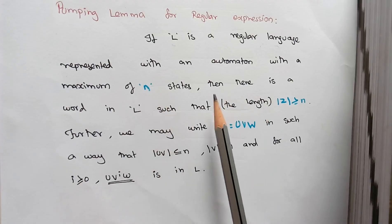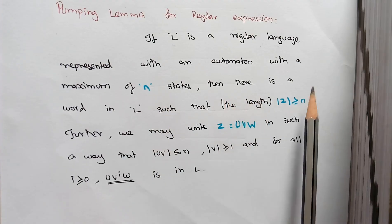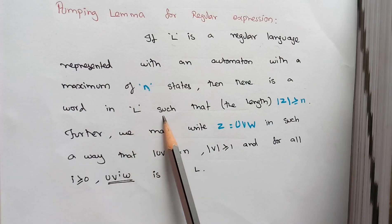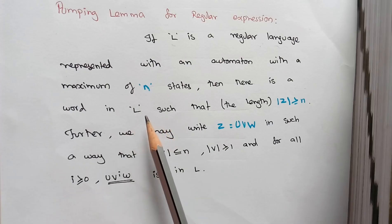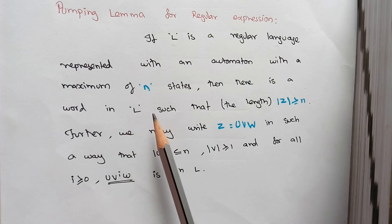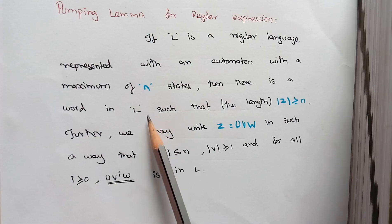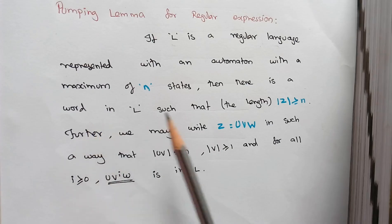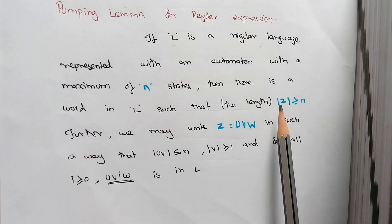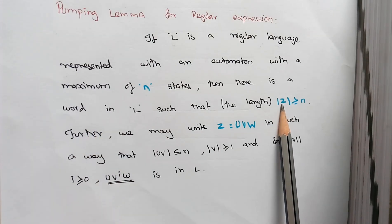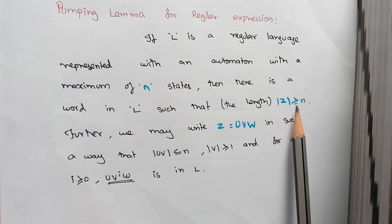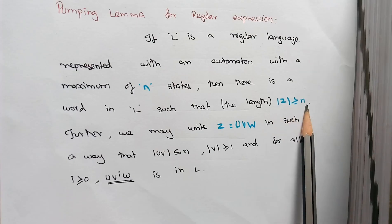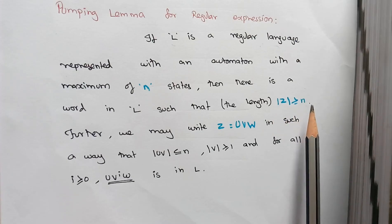As per the definition, there exists a word in L. Whenever it is a regular language, this language will accept some set of input strings. We are going to consider that input string — a word in the sense of an input string — and we call it Z, such that the length of Z is greater than or equal to the number of states N.